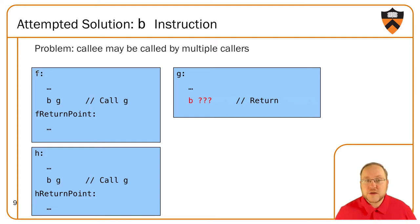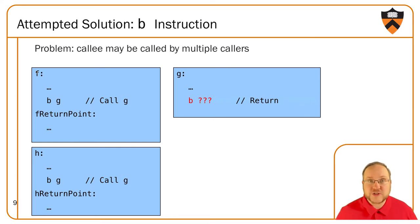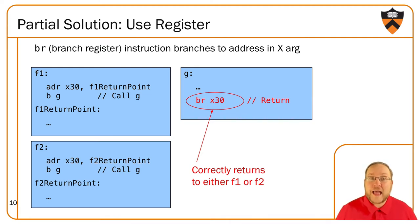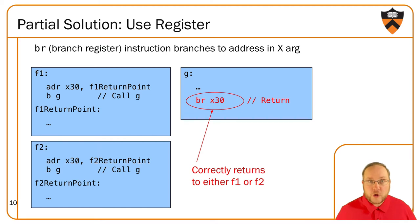We could fix this with some additional context in a register. Before using the B to perform a function call, we would put the address immediately after that B instruction into some register. And then at the end of G, we would do a branch to the location in that register. That would look something like this. It's not ideal, though — we still need to add an ADR instruction, an explicit label after every call, and a convention for what register to use.